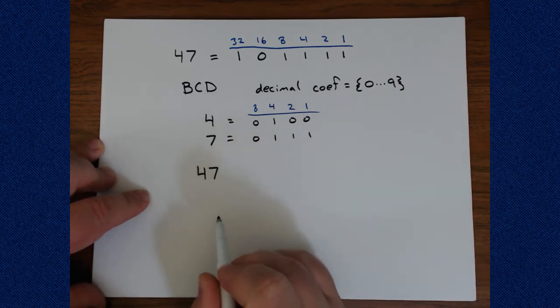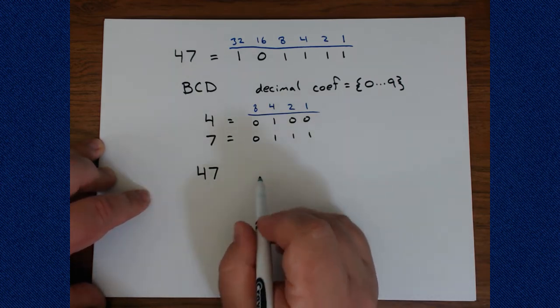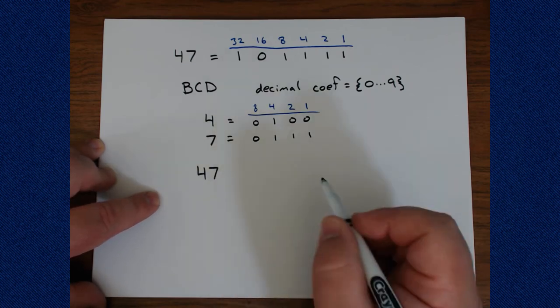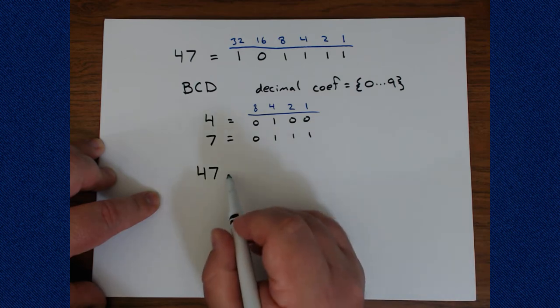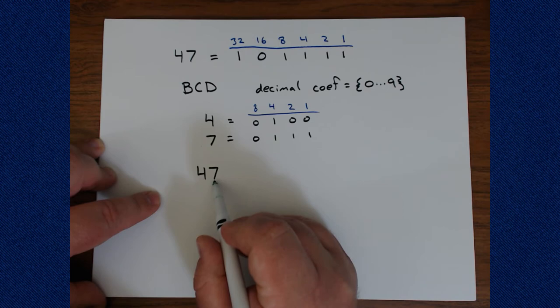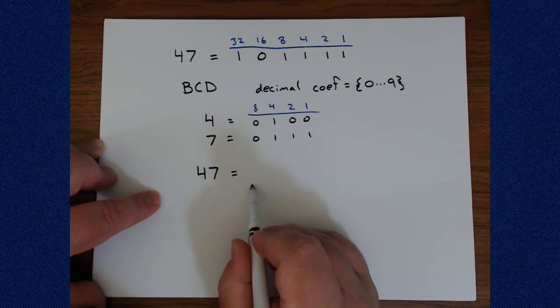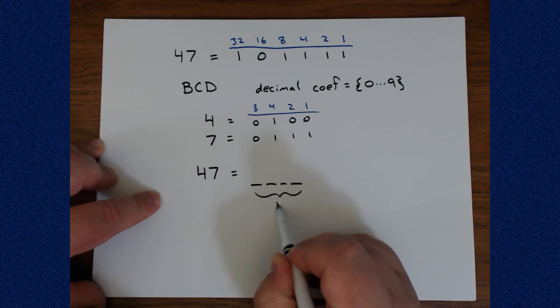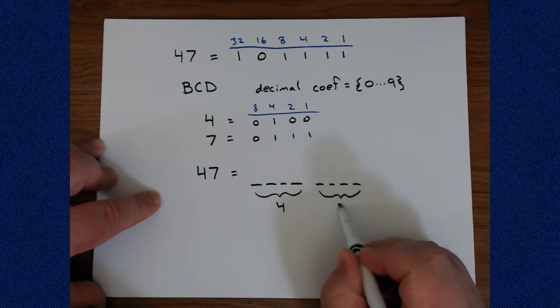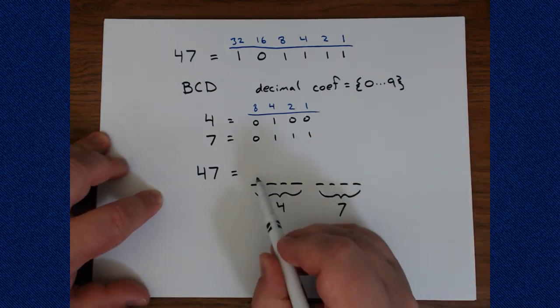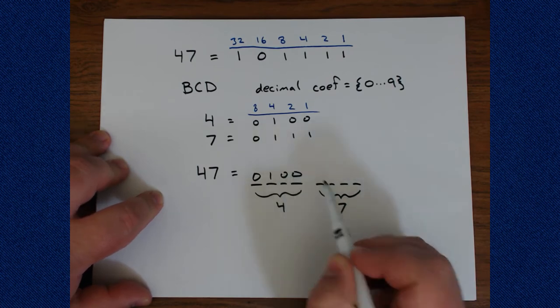If I want the number 47 decimal to be put into a binary computer but recorded in binary coded decimal, then what I'm going to do is take each of these decimal digits and store it in 4 bits of information. So in binary coded decimal, since this is 2 digits, I'll need 4 bits for the 4. These will have to represent 4. Then I'll need 4 bits after that for the 7. Then I just put them there. So 4 is 0, 1, 0, 0. And 7 is 0, 1, 1, 1.